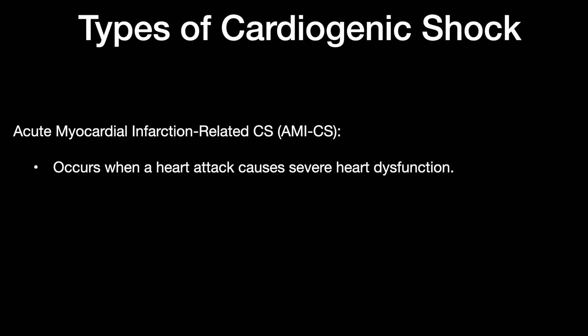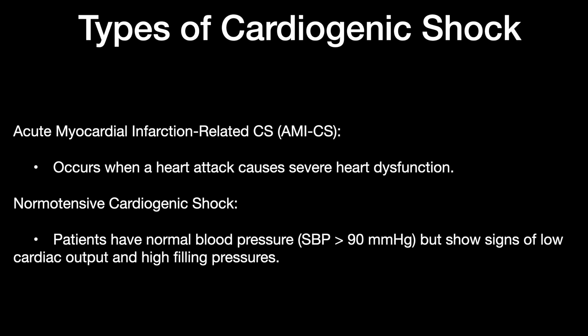What are the types of cardiogenic shock? The most common, around 90%, is acute myocardial infarction-related, which occurs when a heart attack causes severe cardiac dysfunction. Other causes include valvular disorders. Another condition is normotensive cardiogenic shock, where the patient has a normal blood pressure — systolic BP more than 90 — but shows signs of low cardiac output and high filling pressures.